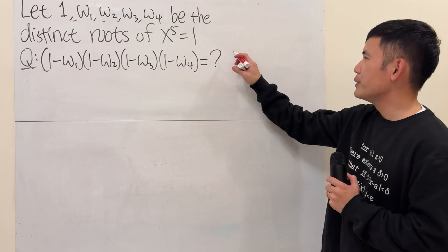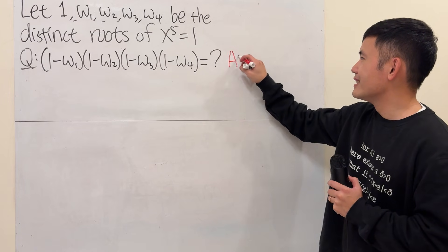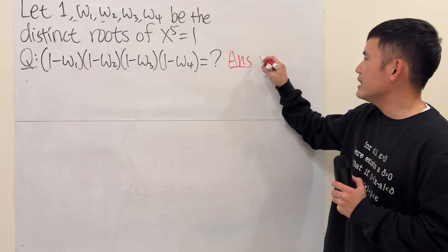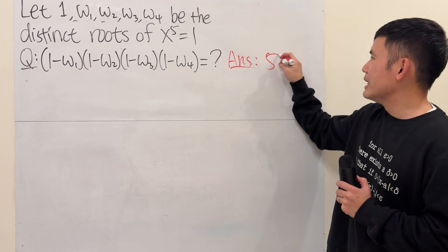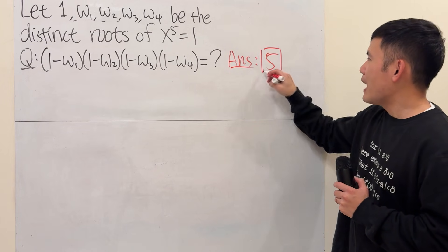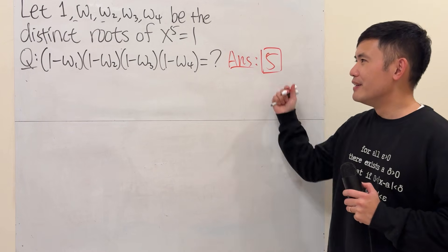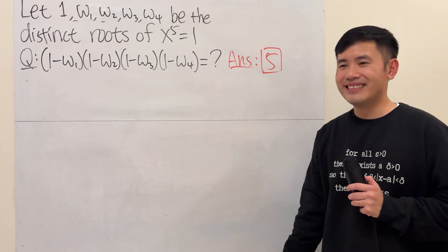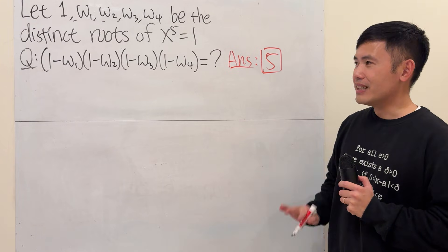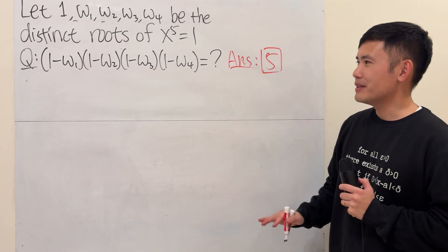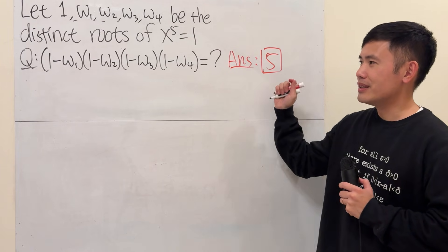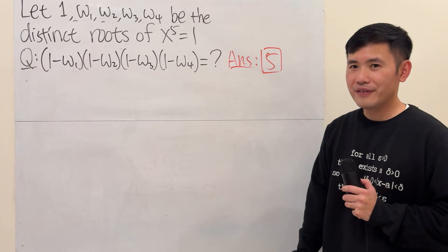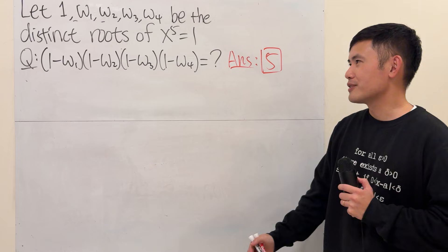Ready? I'll tell you the answer first. The answer is 5. Very nice — it's not 0, it's not 1, it's just 5. Now let's talk about how.